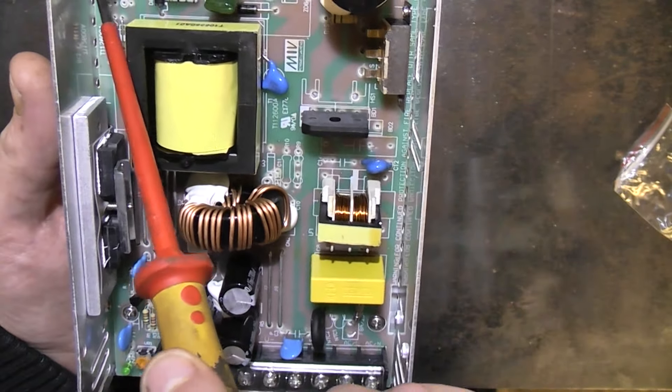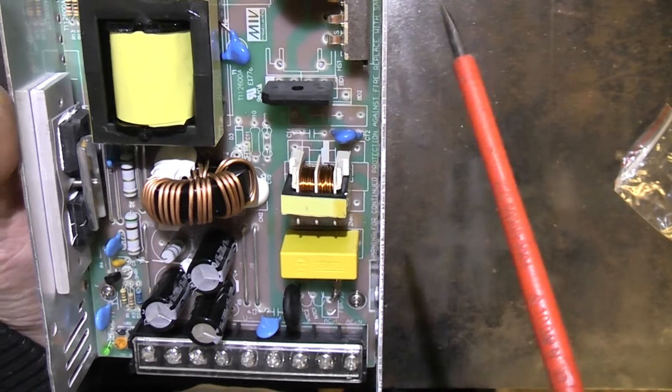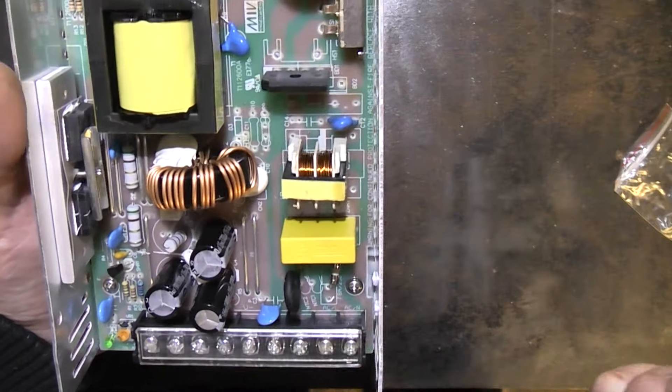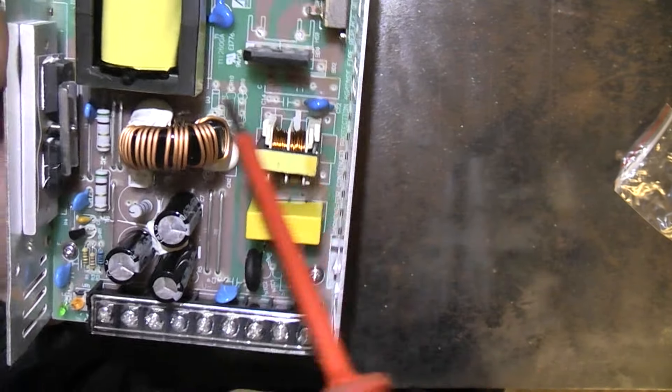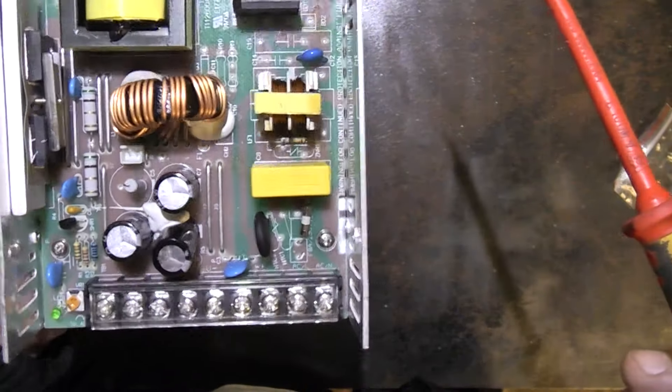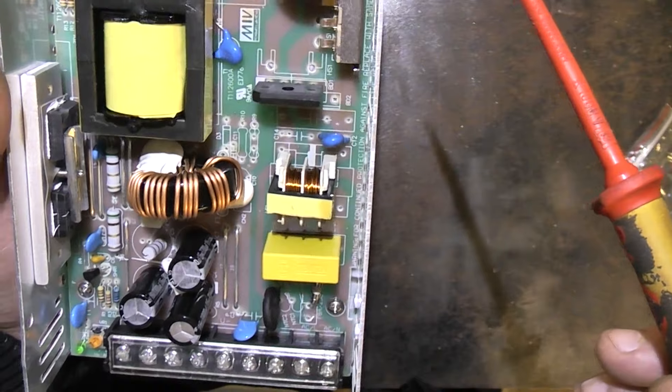There's an opto isolator. I'm not going to take the board out to look at the clearance between the mains side and the output side. There's an RU approval there. To be honest the quality of construction isn't that bad. For what I'm going to be using it for it's going to be quite adequate.